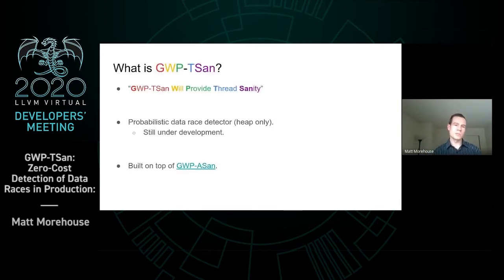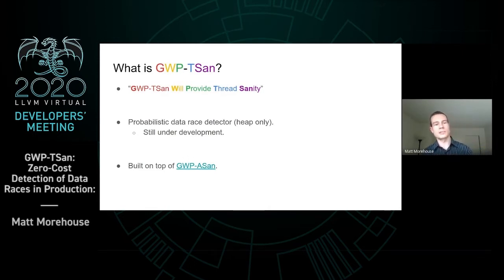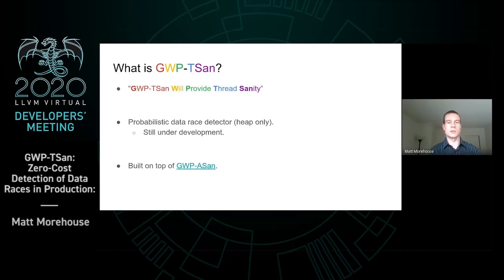GWP-TSAN is a recursive acronym. It stands for GWP-TSAN Will Provide Thread Sanity. More specifically, it's a probabilistic data race detector that we're working on, built on top of GWP-ASAN.